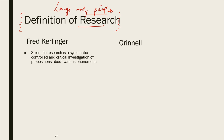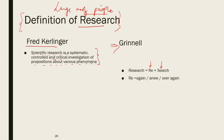What is research basically? According to Fred Kurlinger, scientific research is a systematic, controlled, and critical investigation of propositions about various phenomena. According to Grinnell, research is made of two words — re plus search. 'Re' is a prefix meaning doing something again, anew, over and over. So research means searching which has already been done, but doing it again to find something extra, to examine, probe, test and try.